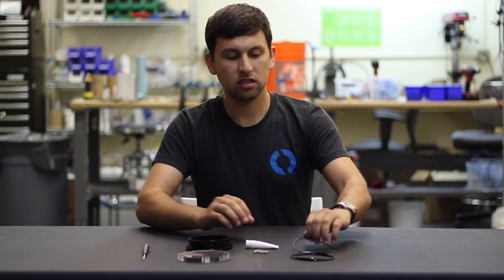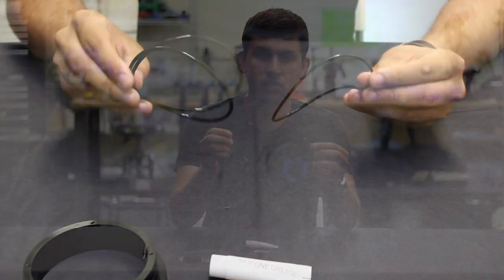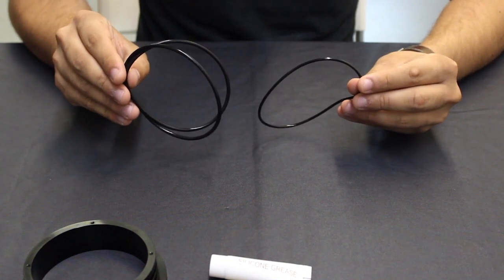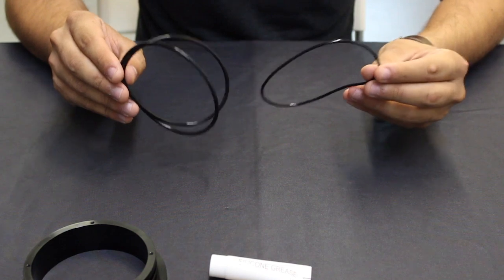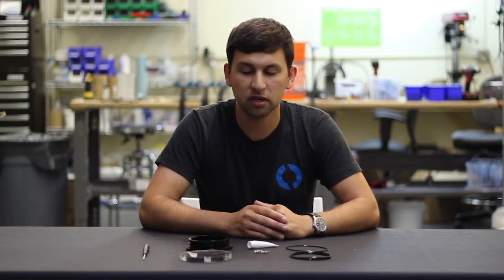I've also got the o-rings that come with the flange. You'll see there's actually two sizes here. One thicker size that goes on the radial ring slots. There's two of those and one thinner one that goes on the face seal of the o-ring flange. I've also got the six screws that come with the end cap and a tube of silicon grease here to lubricate the o-rings before we put them on.